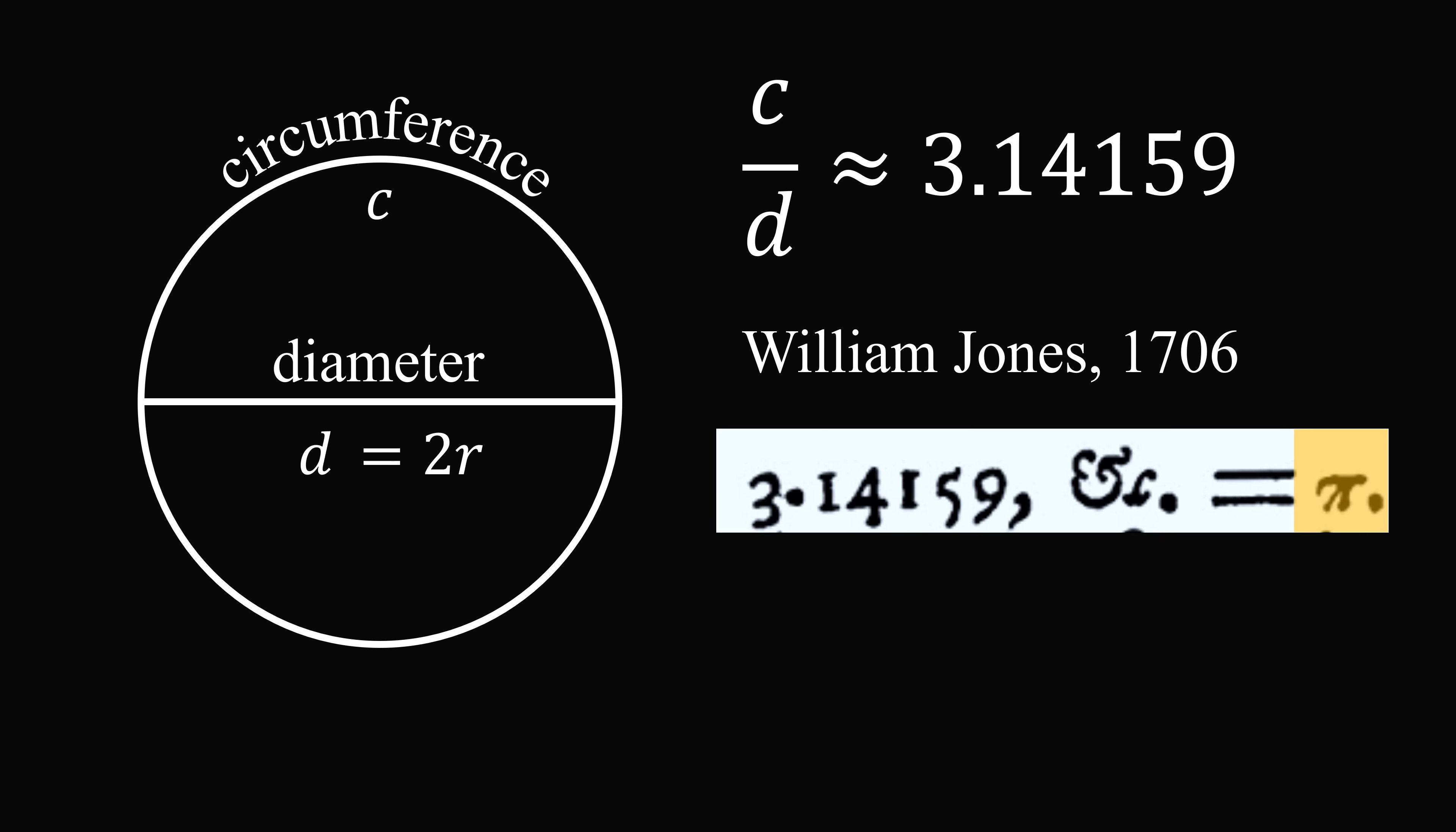So while the ancients were aware of this relationship, they didn't exactly use our notation, and the symbol pi has only been around for about 300 years. So while you might find math class annoying today, think about how cumbersome it was in ancient times without proper notation.